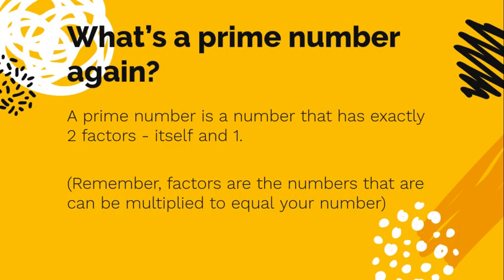So what's a prime number? Again, just refresh your memory. It's a number that has exactly two factors, just itself and 1. And remember, factors are the numbers that can be multiplied to equal your number.